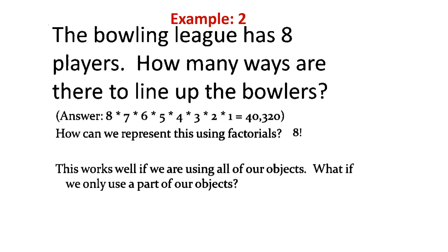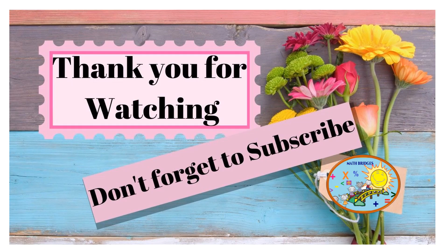You can consider examples based on sports or science — whatever is apt for the students. Here is a sports example: a bowling league has 8 players, so in how many ways can the bowlers be lined up? It is 8 factorial = 8 into 7 into 6 into 5 into 4 into 3 into 2 into 1 = 40,320 ways. I hope you found the video interesting. Please share the knowledge. Thank you all for watching.